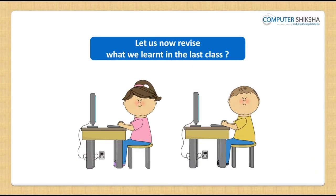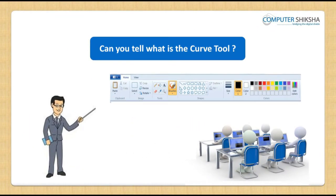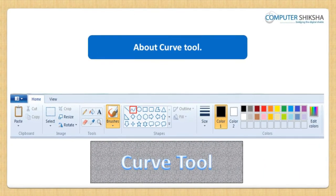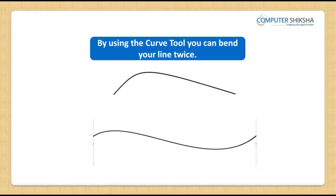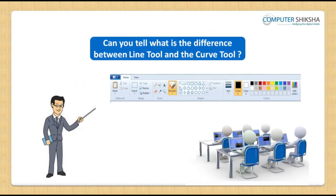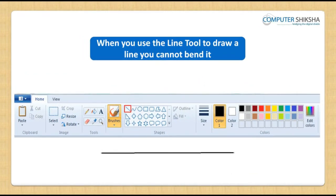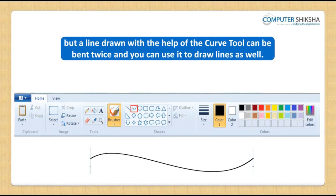Let us now revise what we learnt in the last class. Can you tell what is the Curve Tool? The Curve Tool functions very much like the Line Tool, but using the Curve Tool you can bend your line twice. When you use the Line Tool to draw a line, you cannot bend it, but a line drawn with the Curve Tool can be bent twice, and you can use it to draw lines as well.